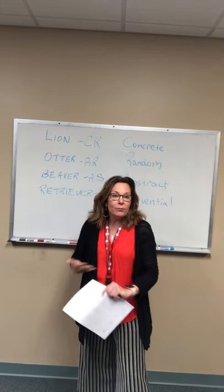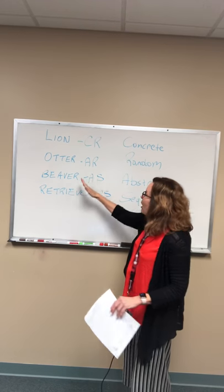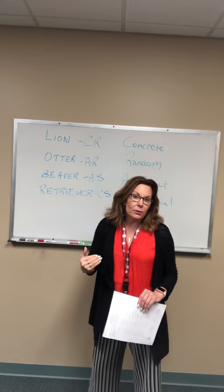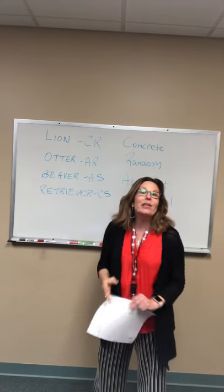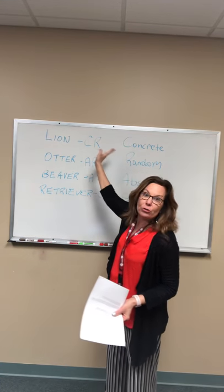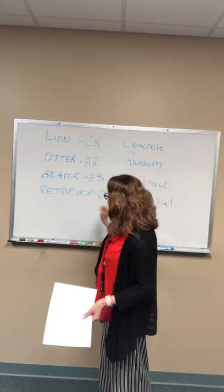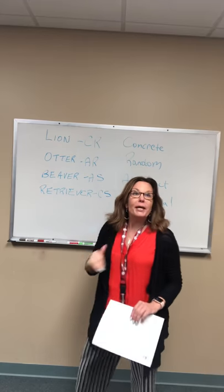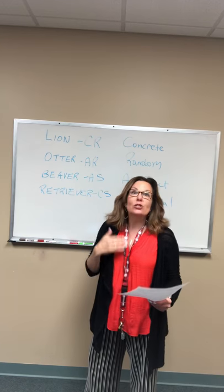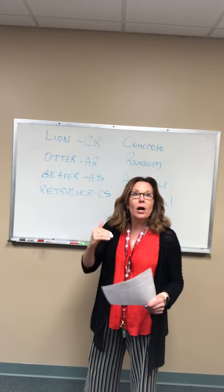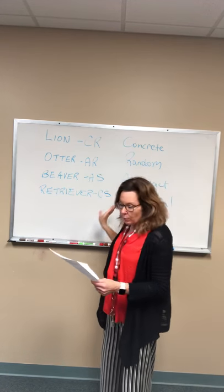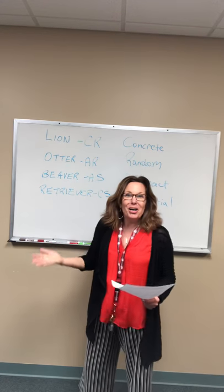Otters are also great networkers — they'll always know someone who knows someone. Beavers are your detail-oriented people, like accountants or engineers. They read the instruction books, whereas a Lion doesn't even know where the instruction books are. A Beaver knows there's a right way to do things and insists on doing it that way. They're very organized, like to solve problems, and want to take their time and do it right.